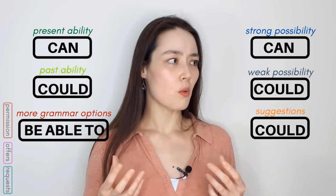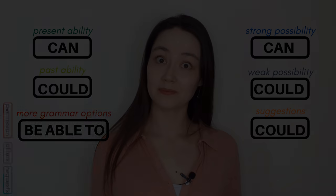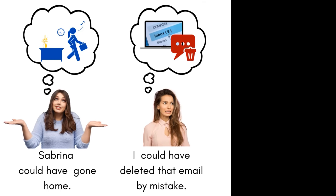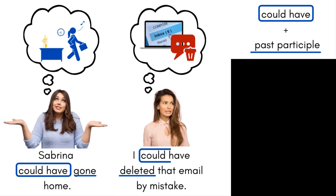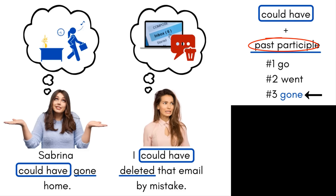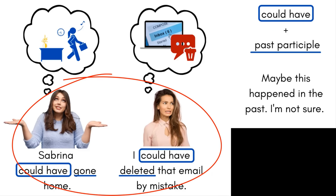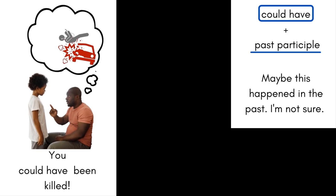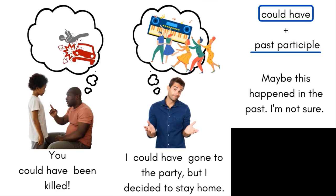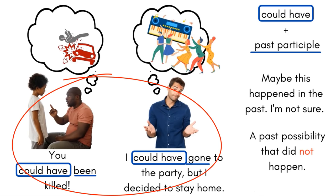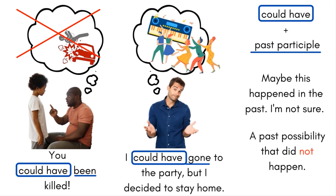Now what about past possibilities? 'Sabrina could have gone home.' 'Oh no, I could have deleted that email by mistake.' This is 'could have' plus the past participle — verb number three. 'Could have go... could have went... no — could have gone.' 'Gone' is the past participle. Here it means maybe this happened in the past — I'm about 50% sure. 'You could have been killed — never cross the street looking at your phone.' 'I could have gone to the party, but I decided to stay home.'